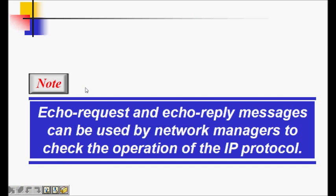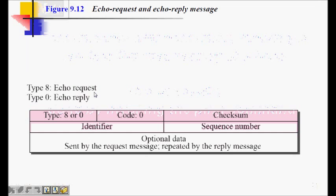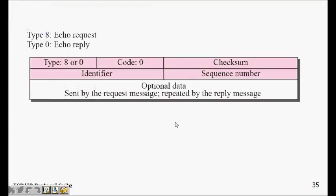Echo request and echo reply messages can test the reachability of a host. This is usually done by invoking the ping command. The type field: type 8 is echo request and type 0 is echo reply; code is 0. The message also contains a checksum, an identifier, a sequence number, and some optional data. The optional data is sent by the request message and repeated by the reply message.